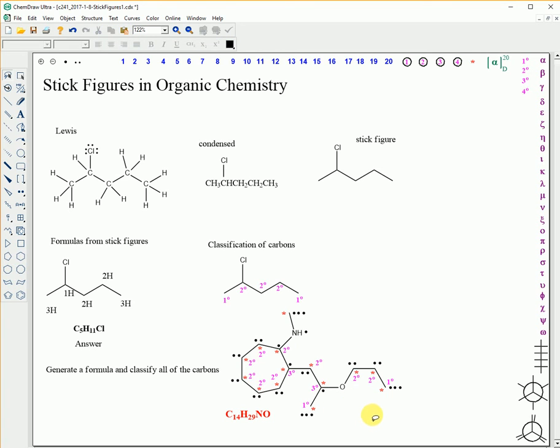I believe the only one that's missing here is this one, which we cannot call primary. Later, we're going to learn this is called methyl. You can think of this methyl as zero-ary. And that is the end of this exercise.